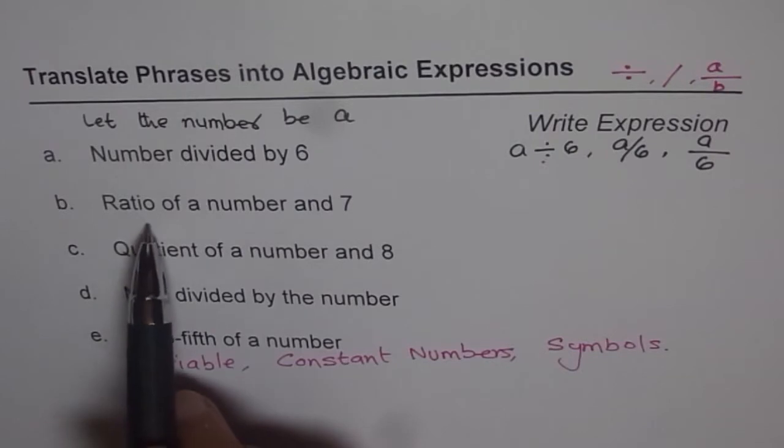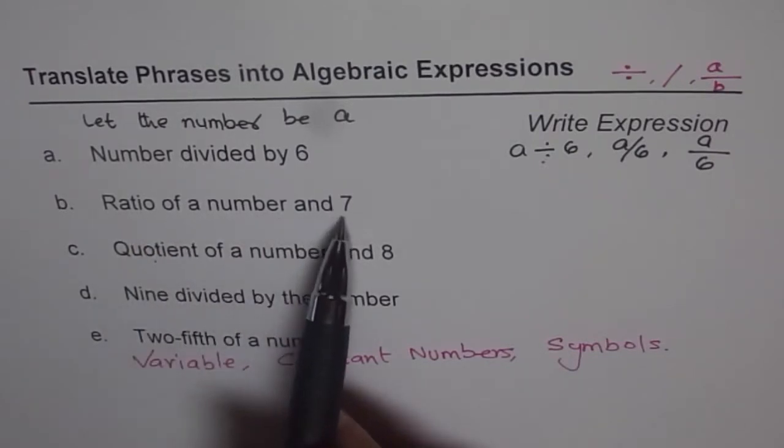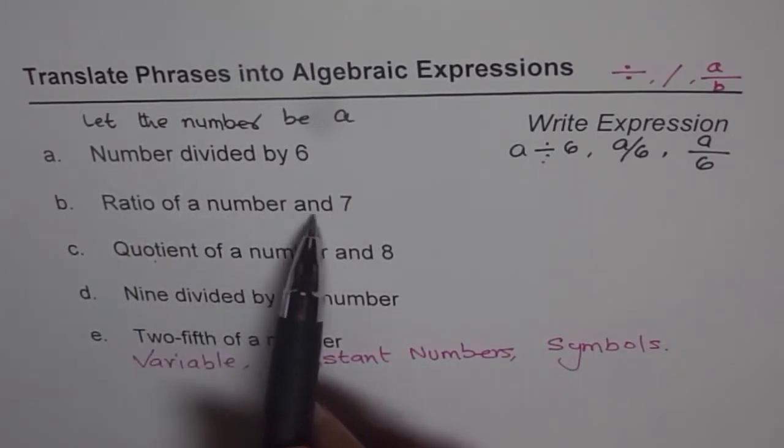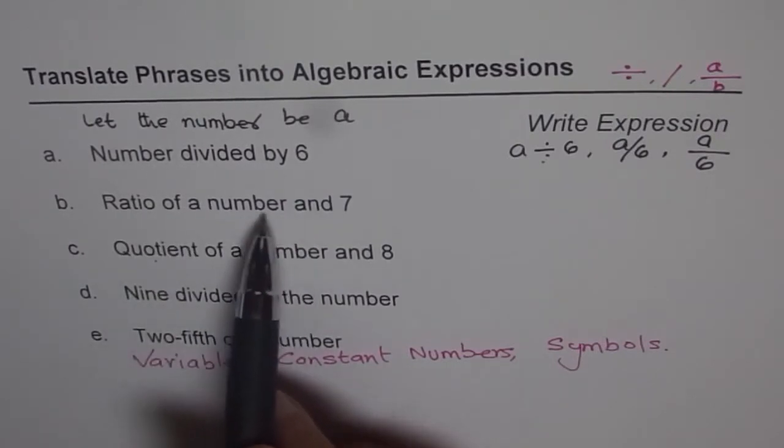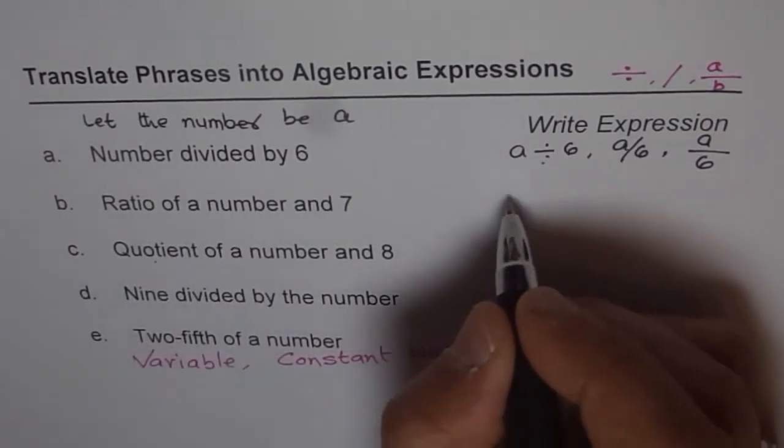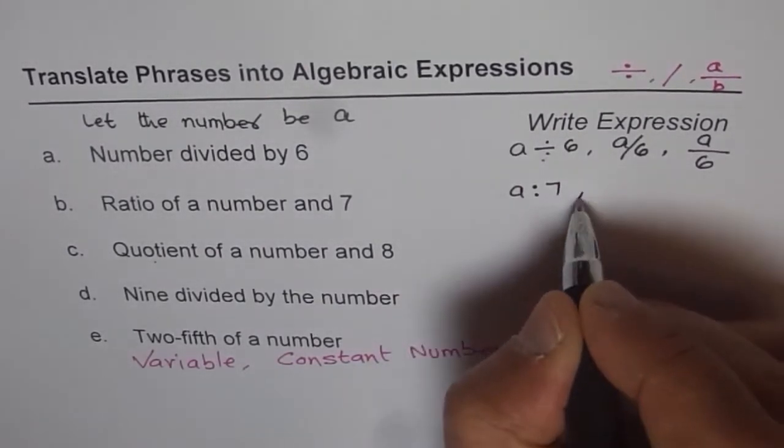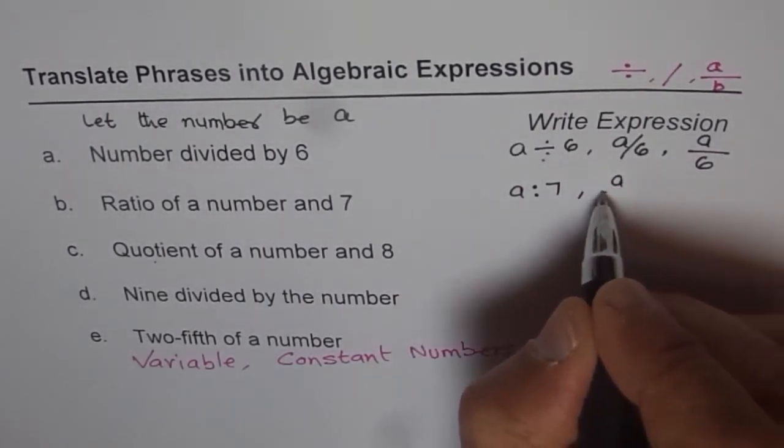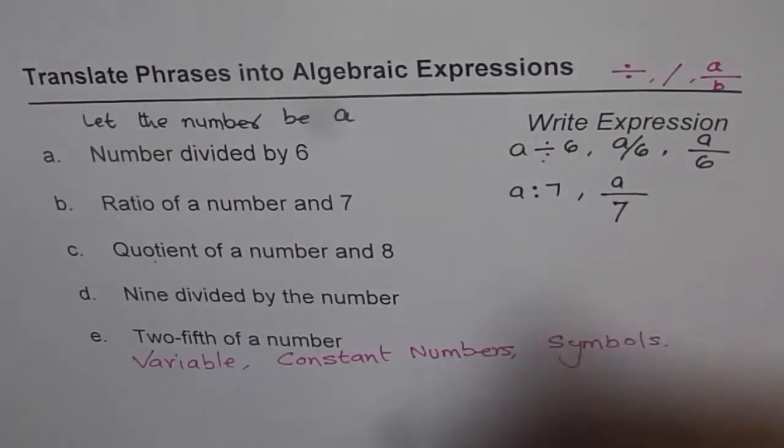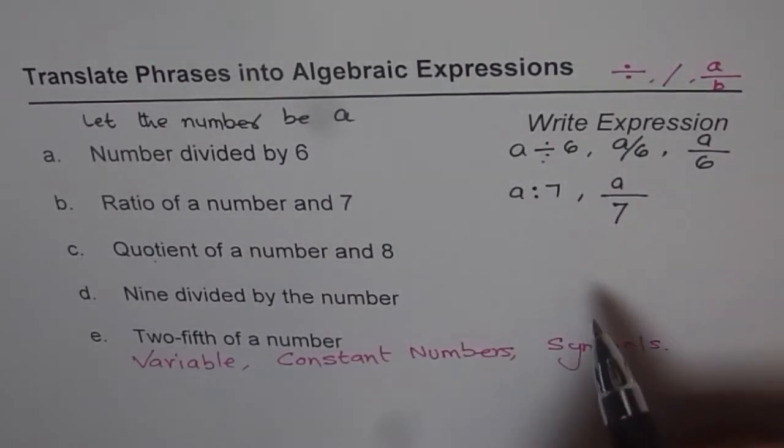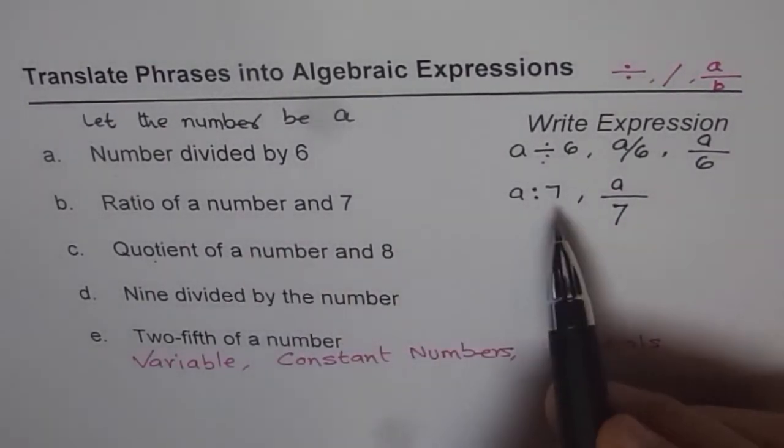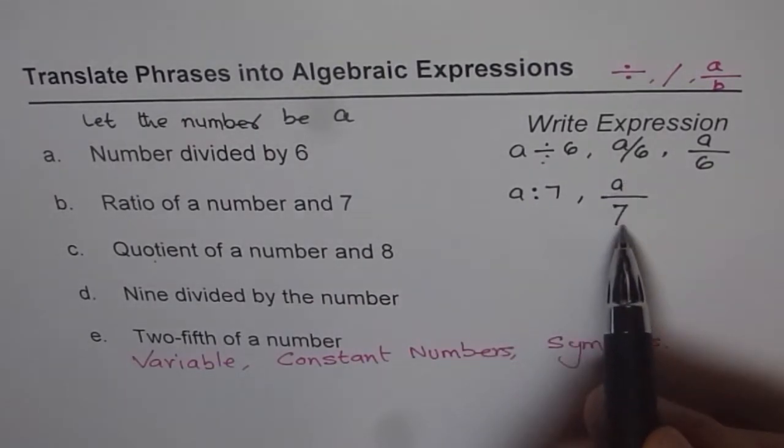Second one is ratio of a number and 7. That means number and 7. When we say ratio of a number and 7, the number comes on top. So it is a is to 7. That is how we write ratio. Or it could be written as a fraction, a over 7. Both are correct. So ratios can be represented with a colon or as this.